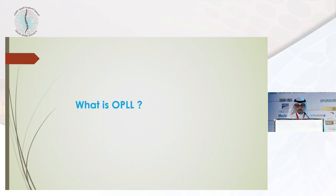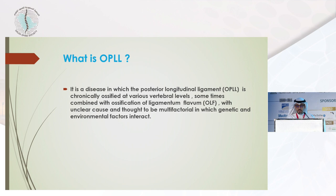We will start with the definition. It's a disease in which the posterior longitudinal ligament is chronically ossified at various vertebral levels. It's sometimes combined with the ossification of other ligaments like the ligamentum flavum, especially in the thoracic spine.